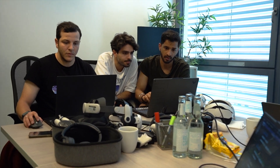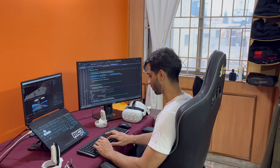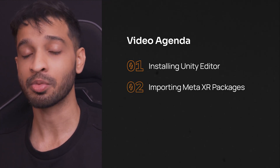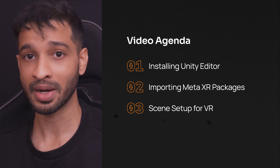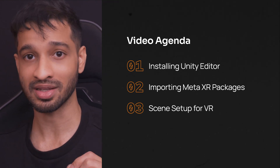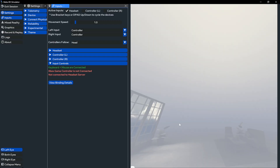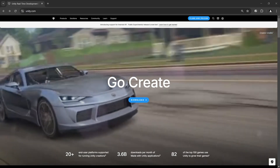In our previous video we had a look at all the things you will need — the hardware, software, and skills required to get started with VR development in 2025. In today's video we'll be taking more concrete steps towards building a VR application for the Meta Quest devices. You will see how to download and install Unity Editor, create a new project, and import all the packages you'll need. We'll also set up the scene for VR development and test it on the headset using Meta Quest Link.